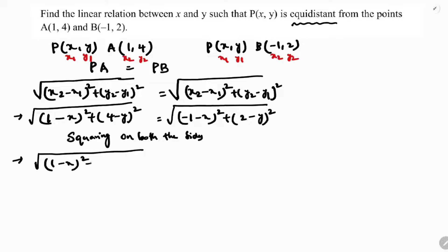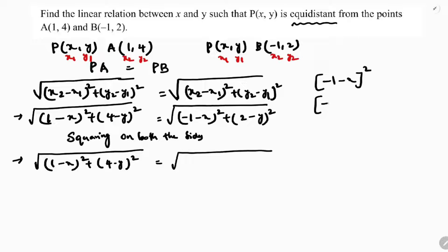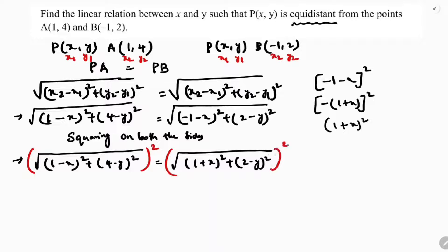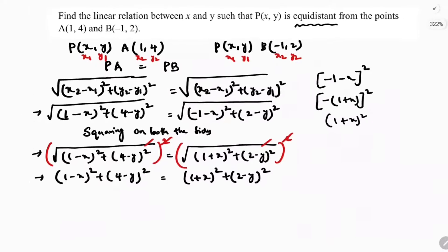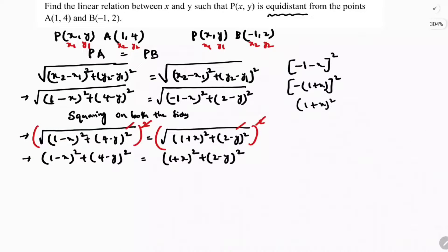Substituting the values: square root of (1 minus x) whole square plus (4 minus y) whole square equals square root of (1 plus x) whole square plus (2 minus y) whole square. Squaring both sides, the square root and square cancel, leaving: (1 minus x) whole square plus (4 minus y) whole square equals (1 plus x) whole square plus (2 minus y) whole square.